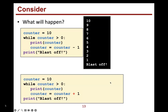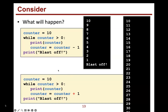Now what would happen if I had the exact same code but instead of a minus I put a plus? I kept everything else the same. Hopefully you realize: starting at 10, it's greater than zero, I print 10 and increase it to 11. Is 11 greater than zero? Yes, print it again, increase it again — it just scrolls off the screen and never ends.